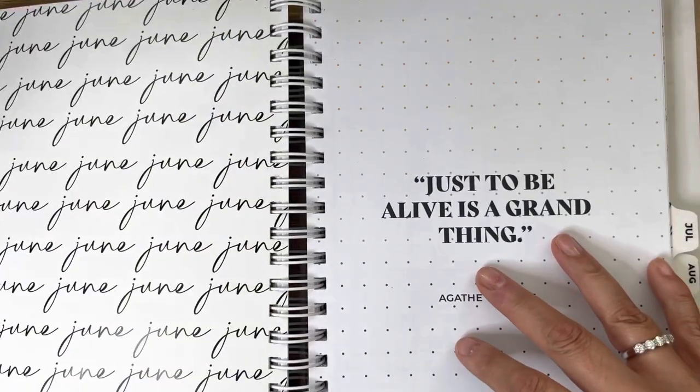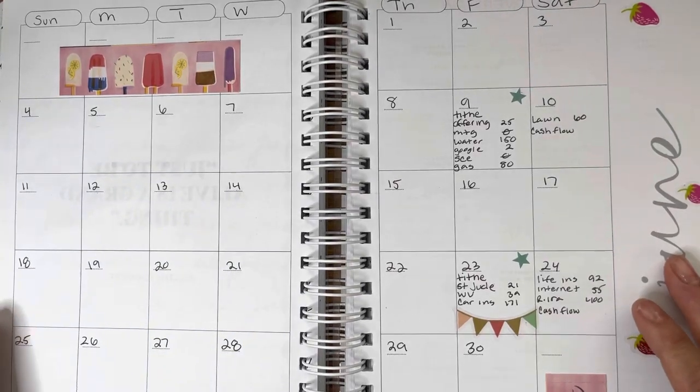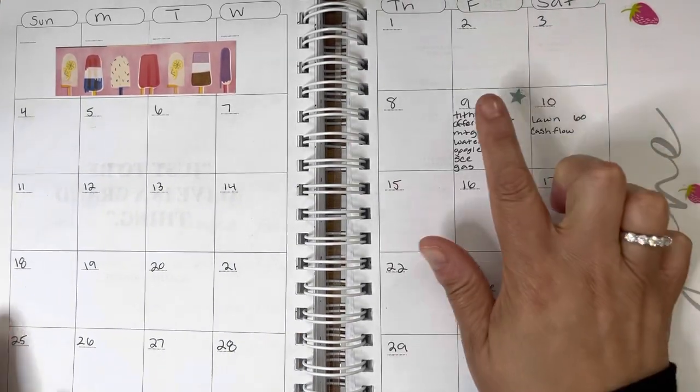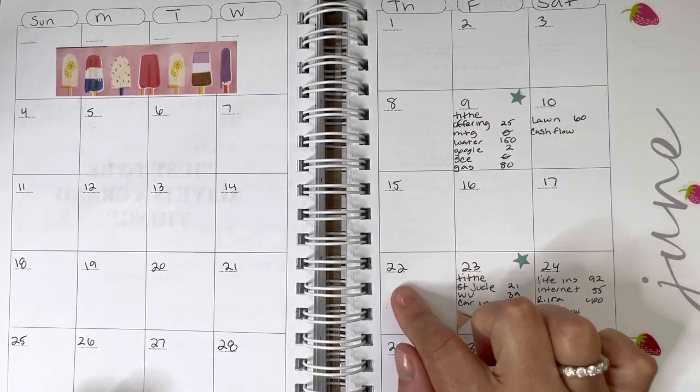Let's go to the calendar spread. So paycheck number one, that was on the 9th, and that's going to cover bills from the 9th to the 22nd.